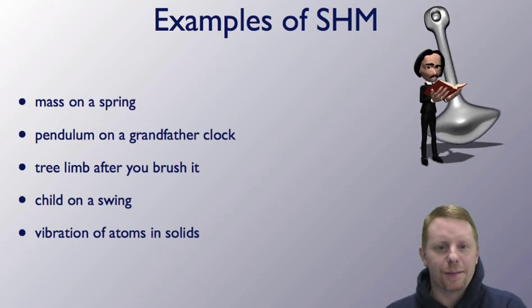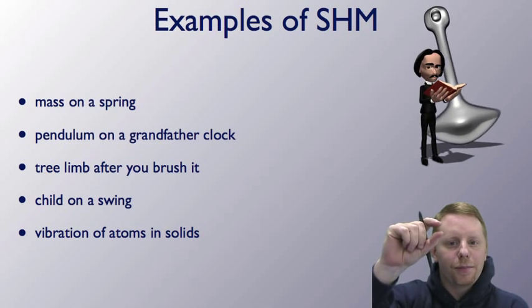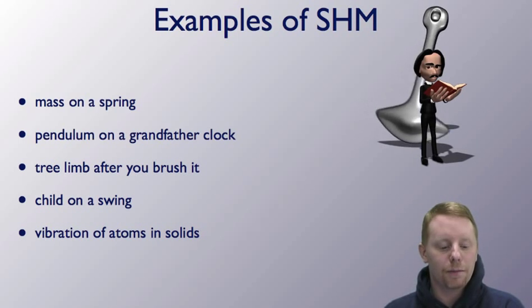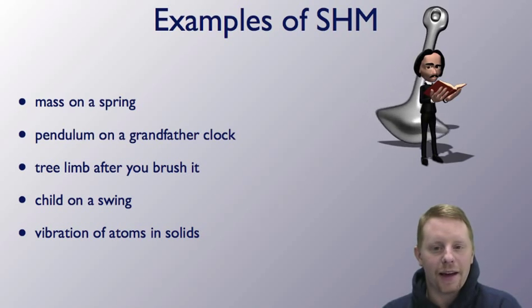So some examples of simple harmonic motion: a mass on a spring pulled down and allowed to oscillate back and forth, a pendulum on a grandfather clock, a tree limb after you brush it, a child on a swing, and even the vibration of atoms in solids can be modeled as simple harmonic motion.